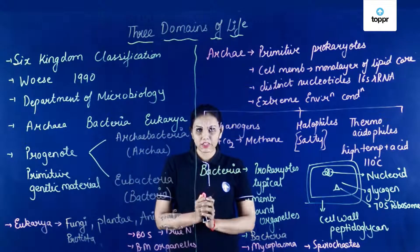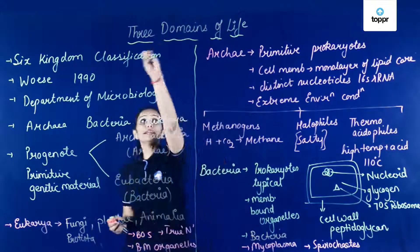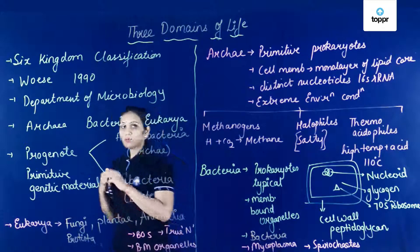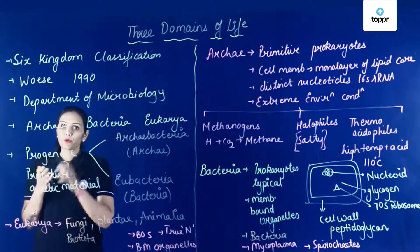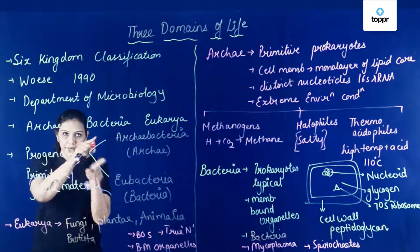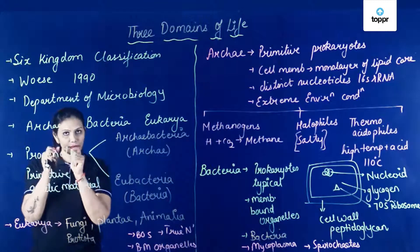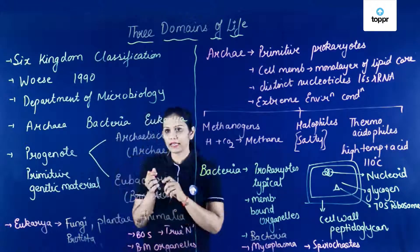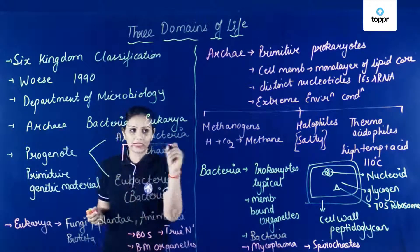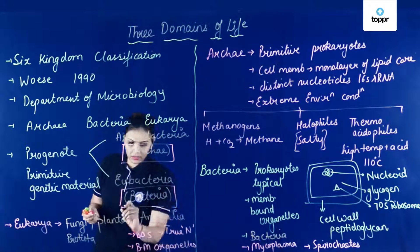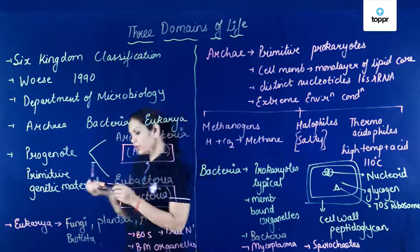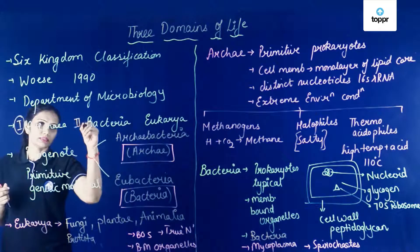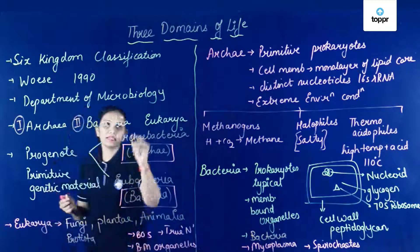Now let's revise what we have seen in this session. Hamne dekha three domains of life — kisne propose kiya? Woese ne. Because he argued: prokaryotes, eukaryotes toh theek hai. But jo prokaryotes hai woh separately originate hue hai — that is progenote jiske paas primitive genetic material hai. So one is Archaebacteria and one is Eubacteria, jise hum aaj Archaea and Bacteria ke naam se jaante hai. So he proposed the three domains of life — that is Archaea, Bacteria, and Eukarya.